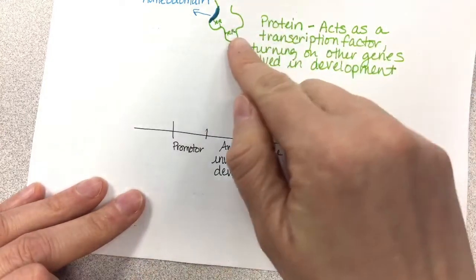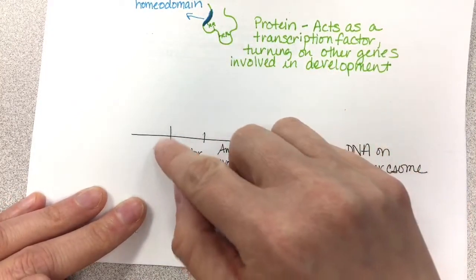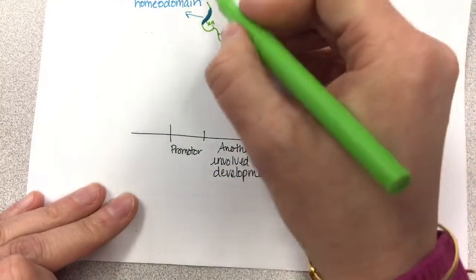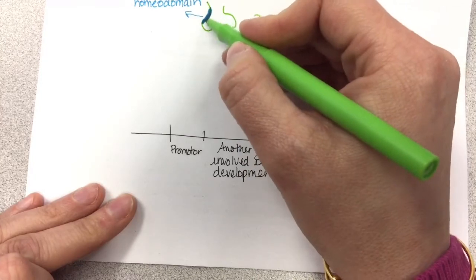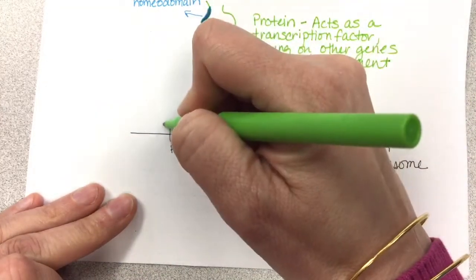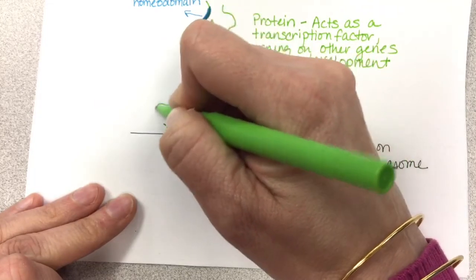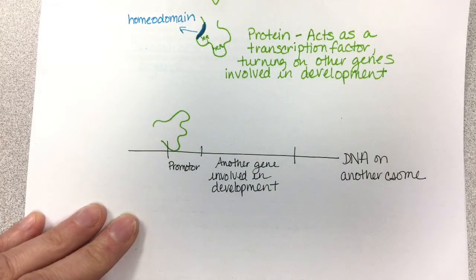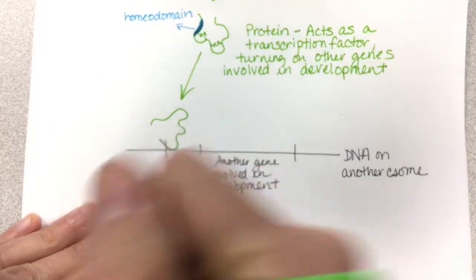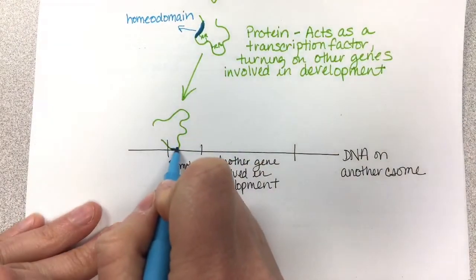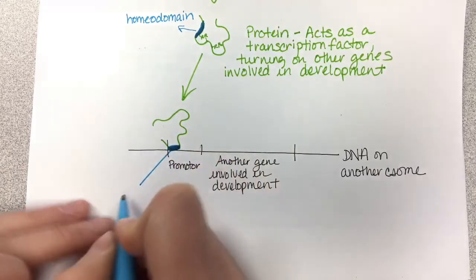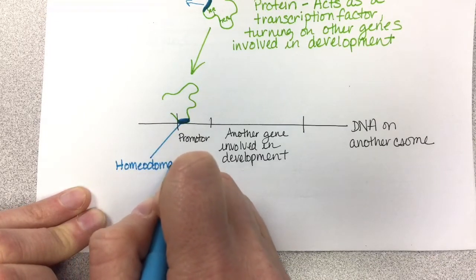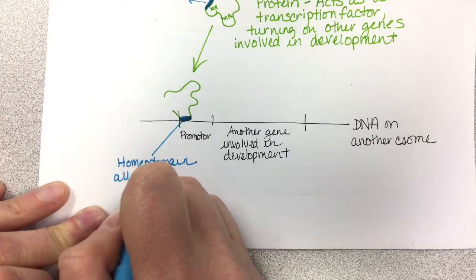What happens is this protein is going to act as a transcription factor. Transcription factors bind to the TATA box in the promoter region. When this protein comes over to bind, the homeodomain part of the protein is going to bind to the promoter. The homeodomain allows it to bind to the promoter.